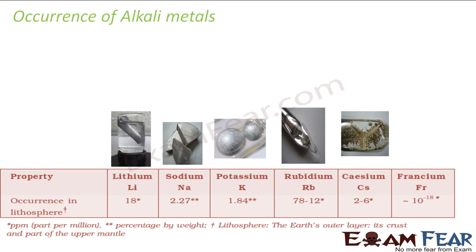Let us talk about the occurrence of alkali metals. The alkali metals are lithium, sodium, potassium, rubidium, cesium, and francium. For sodium and potassium, a double star indicates percentage by weight, while a single star indicates parts per million.